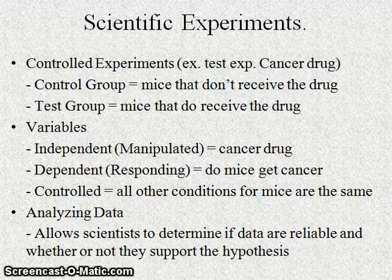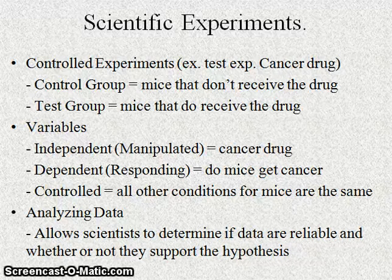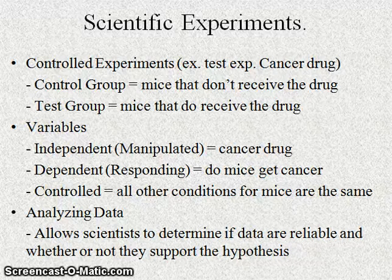Controlled variables are all the other conditions kept the same for both groups of mice: the same food, the same water, the same genetic background, and exposure to the same cancer-causing factors. After the experiment, we analyze the data to determine if the data are reliable and whether or not they support the hypothesis.